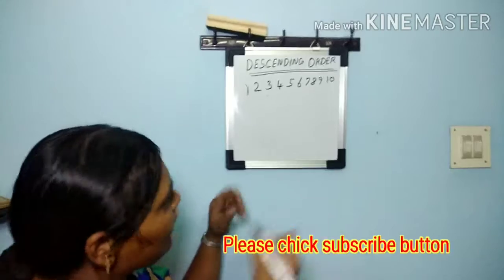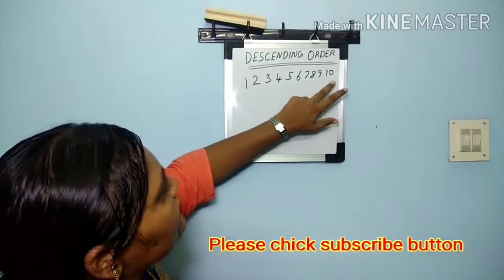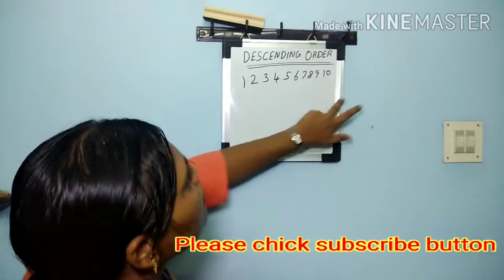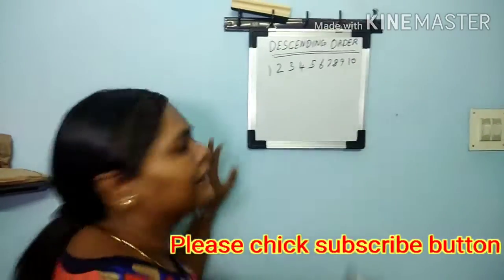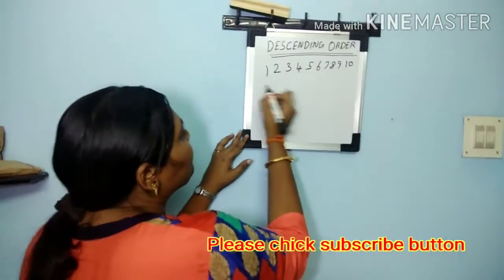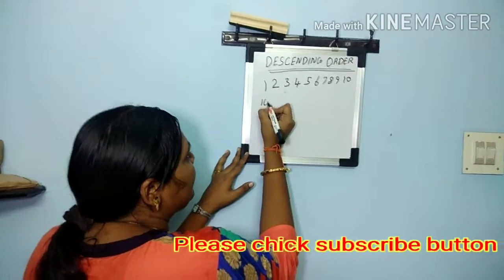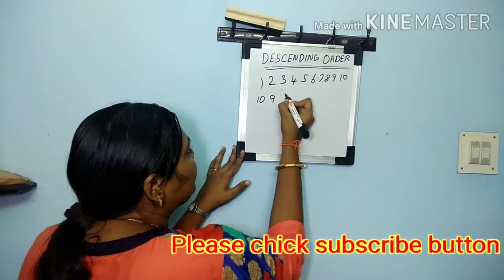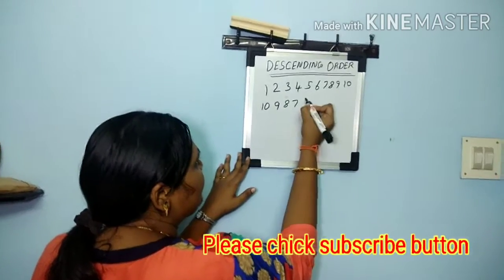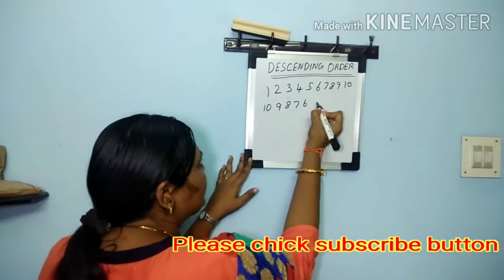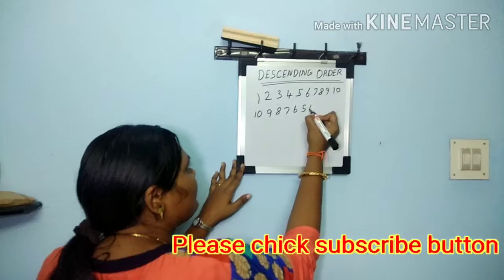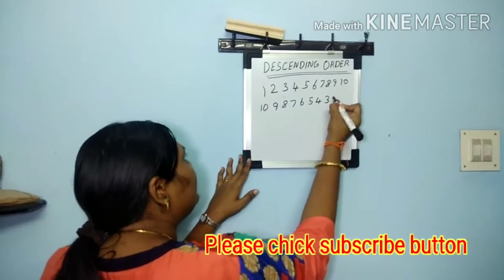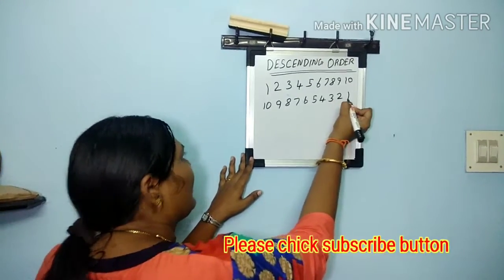After that, you ask them to write from 10 to 1 in the next line. So: 10, 9, 8, 7, 6, 5, 4, 3, 2, 1.